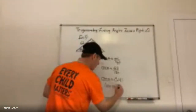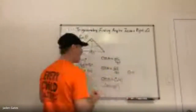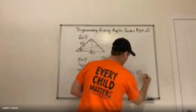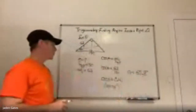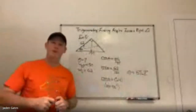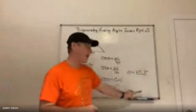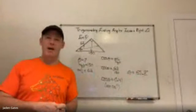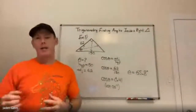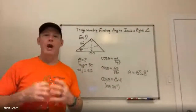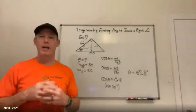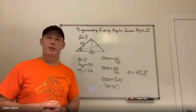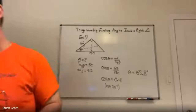Since we have the cosine ratio and want the angle, this time I use cosine inverse. Typing that into the calculator, I get my angle to be 65.8 degrees. This follows the same steps as finding a side in a right triangle using trigonometry: figure out what sides you have, choose the correct trig ratio, substitute in your information, and solve — the only difference at the end is using the inverse function to find the angle.